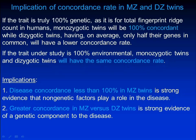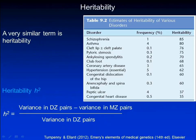Greater concordance in monozygotic twins than dizygotic twins is strong evidence of a genetic component to the disease. Based on concordance rate, heritability is defined as variance in dizygotic twins minus variance in monozygotic twins, divided by variance in dizygotic twins. Here are heritability data from some common disorders — the higher the heritability, the greater the genetic contribution to the disorder.